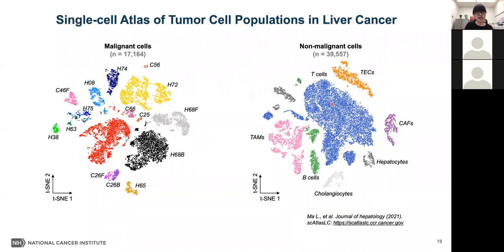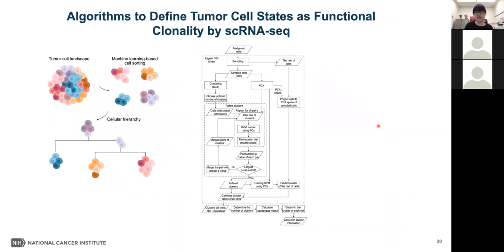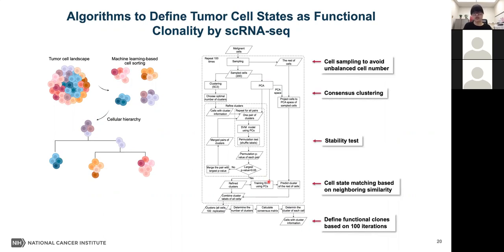Non-malignant cells were mainly grouped according to their cell types, annotated as T cells, B cells, macrophages, etc. To study tumor functional clonality in malignant cells, I developed an algorithm to define tumor cell states reflecting functional clonality, based on the concept that tumor cells are organized in a hierarchical manner. This algorithm is composed of five modules: cell sampling to avoid unbalanced cell numbers, consensus clustering to identify cells with similar transcriptomes, a stability test, a neighboring similarity search to map corresponding tumor cells, and repetition for 100 iterations to obtain stable functional tumor cell clones linked to each tumor.